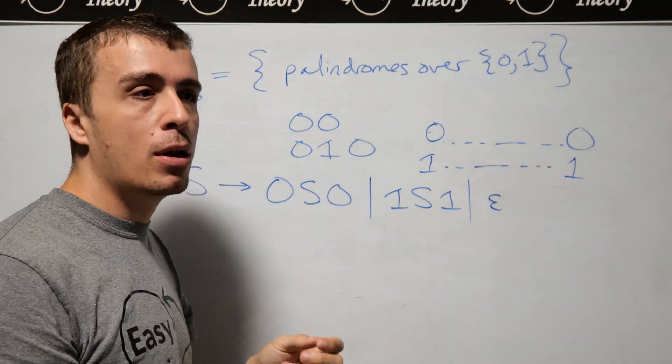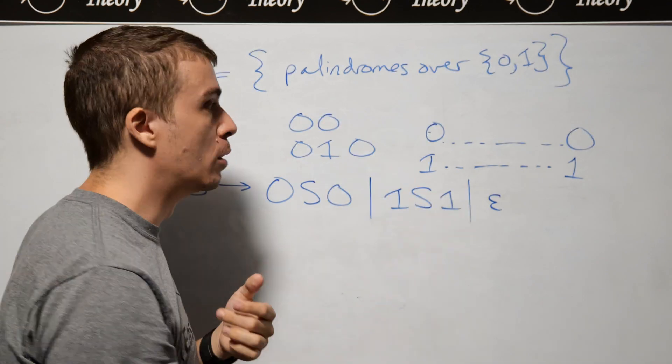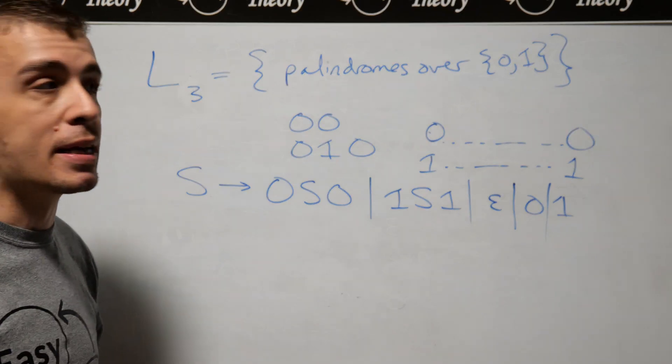But if we think about a string of length 1, it's exactly the same forwards and backwards. Therefore, I need to add the base cases of 0 and 1 here.